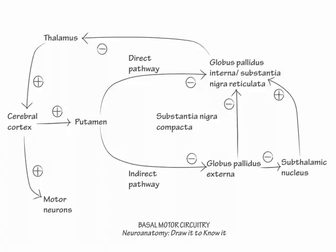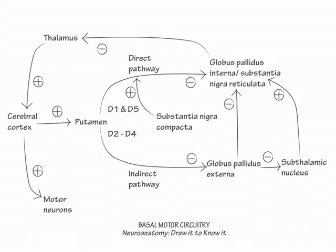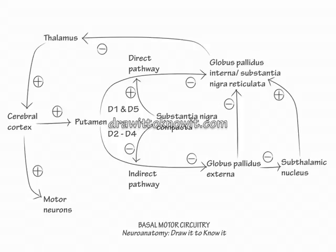Indicate the dopamine 1 and 5 receptors, which are excitatory. Show that substantia nigra compacta activation of these receptors causes excitation of the direct pathway, and thus excitation of the excitatory loop. Then label the dopamine 2 through 4 receptors, which are inhibitory. Show that substantia nigra compacta activation of these produces inhibition of the indirect pathway, and thus inhibition of the inhibitory loop. In short, the substantia nigra compacta acts on both pathways to generate the same ultimate effect: the promotion of movement. This concludes our drawing of the basal motor circuitry.